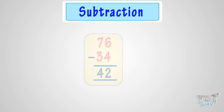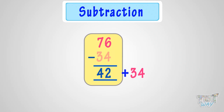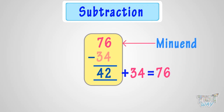Let's take one more example. Here is a subtraction problem done — let's check it. Add the subtrahend to the difference. We got 76, which is the minuend, so it's correct.